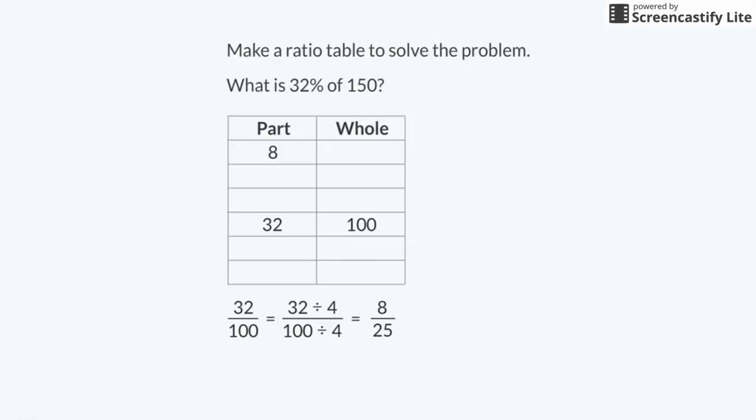Now, I know the part will increase by 8 every time the whole increases by 25. The next equivalent ratios in the table are 16 over 50 and 24 over 75.